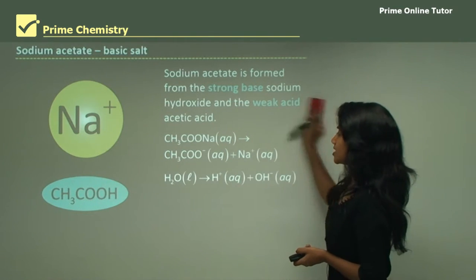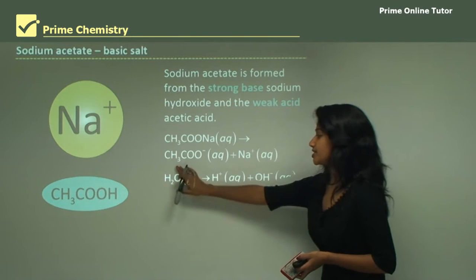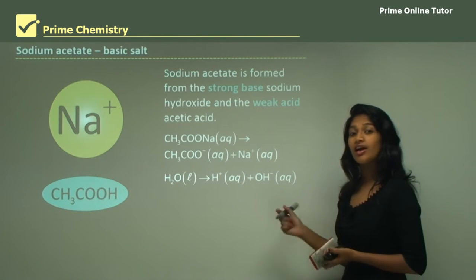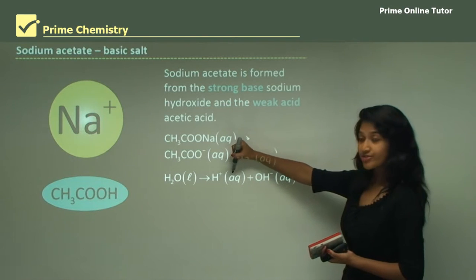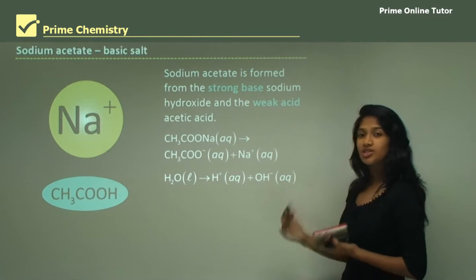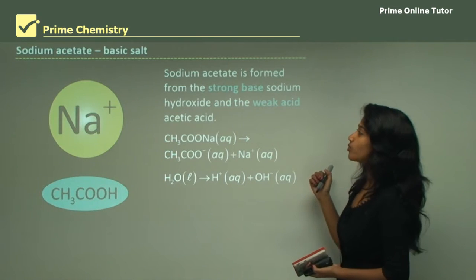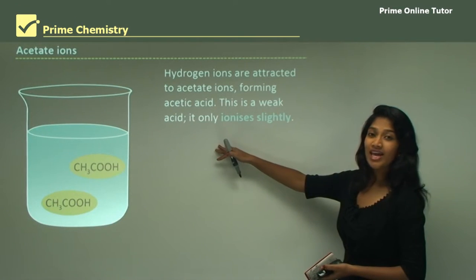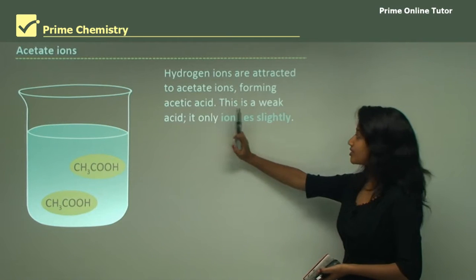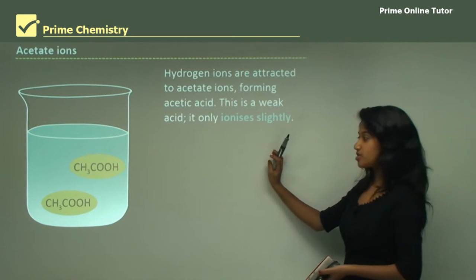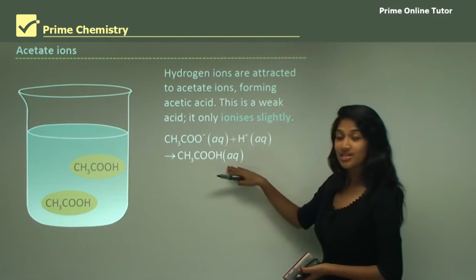Again water is present and ionizes to form hydrogen ions and hydroxide ions. The solution contains acetate ions, sodium ions, hydrogen ions, and hydroxide ions. We need to determine which is in greater concentration. Hydrogen ions are attracted to the acetate ions to form acetic acid — a weak acid that only ionizes slightly — so only one hydrogen ion is returned per two molecules of acetate ion.